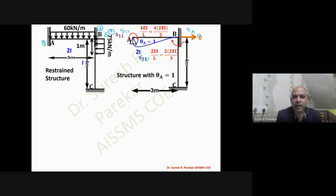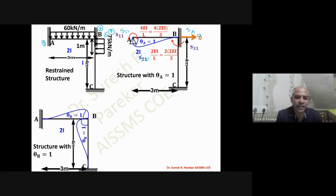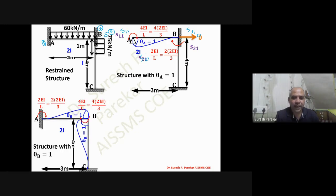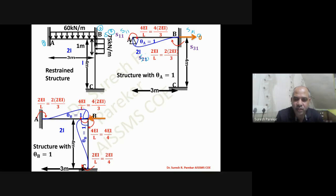Applying θB = 1: moments are applied for BA and BC. The reaction at B is due to BC only. Since moments are clockwise, the reaction must develop an anti-clockwise moment. This gives a reaction of 6EI/4² for that member.